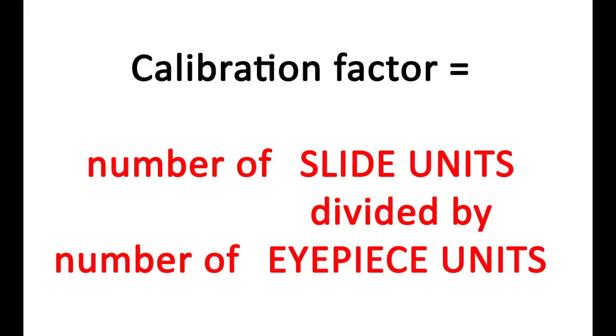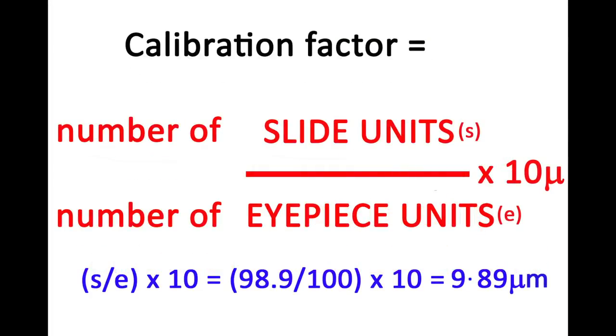Ah, but remember each slide unit is 10 microns in length, so you must multiply this value by 10. So putting these numbers into the formula we get a true value for each eyepiece unit using this 10x objective, which is 9.89 microns, not 10 microns.